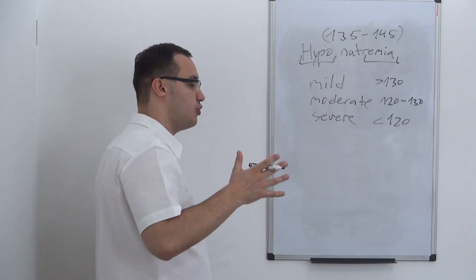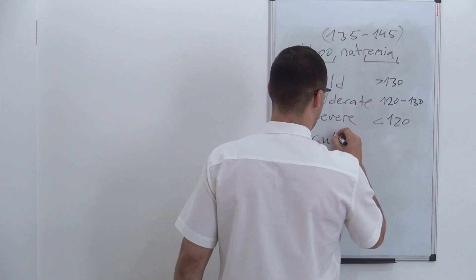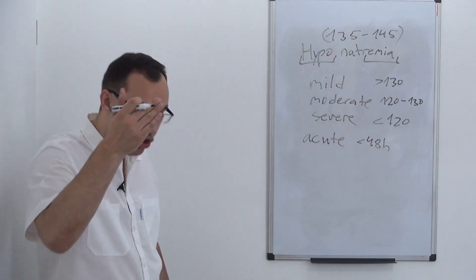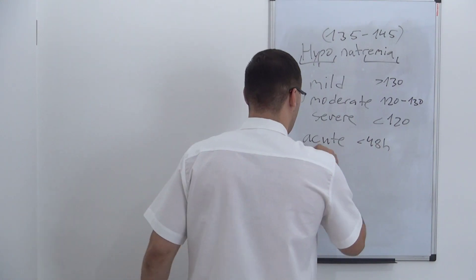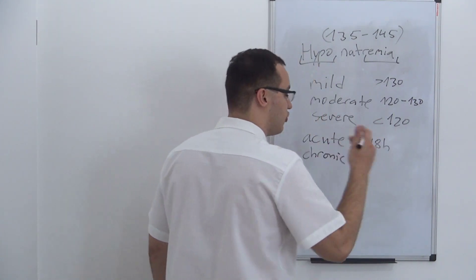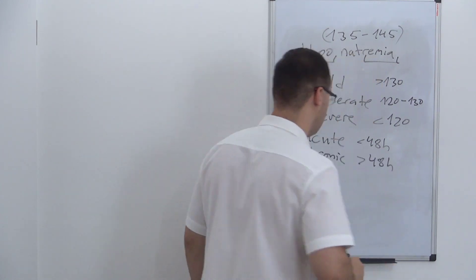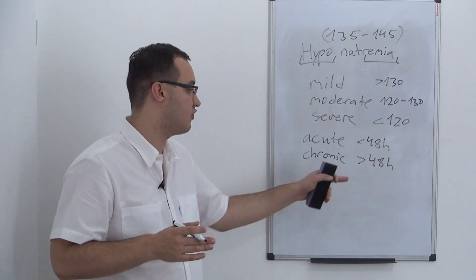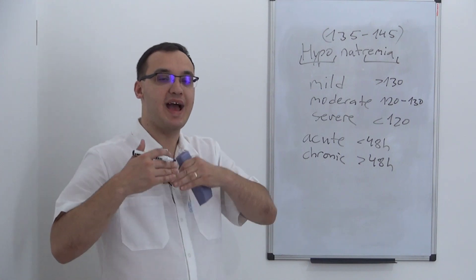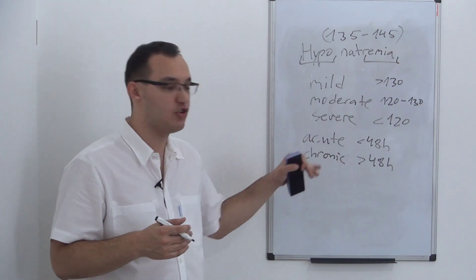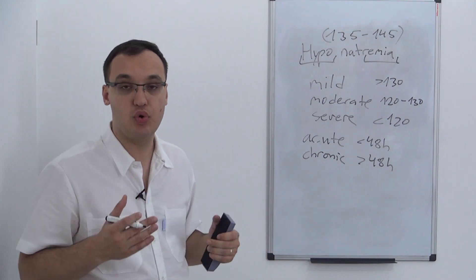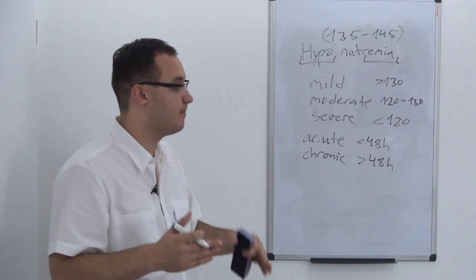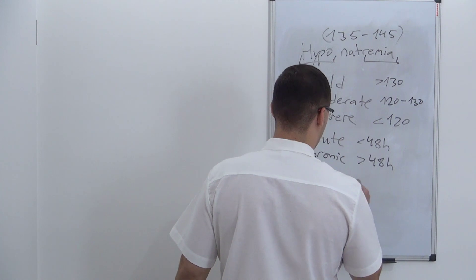We can also divide hyponatremia into two groups: acute, which is less than 48 hours — so the patient got this lower sodium level in less than 48 hours — or chronic, meaning many days or weeks, so more than 48 hours. The acute type is more dangerous than the chronic one, because in the chronic type the body had time to compensate for the low sodium. But in acute, the body has no time, so the low sodium suddenly causes brain swelling — brain edema.